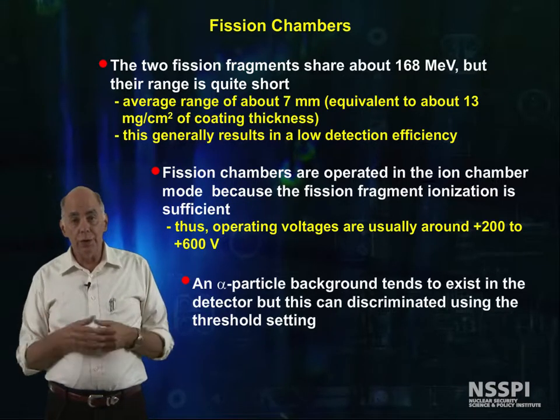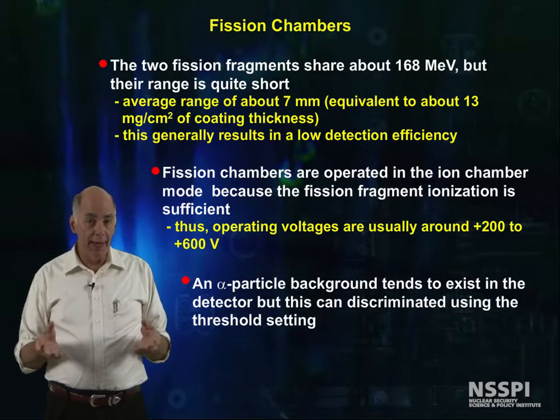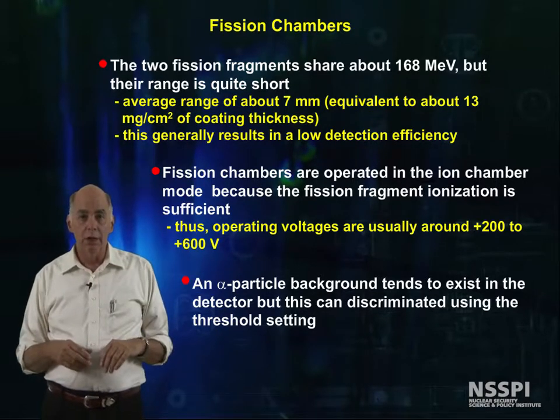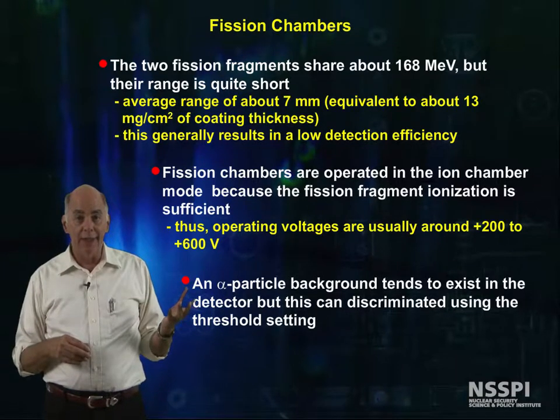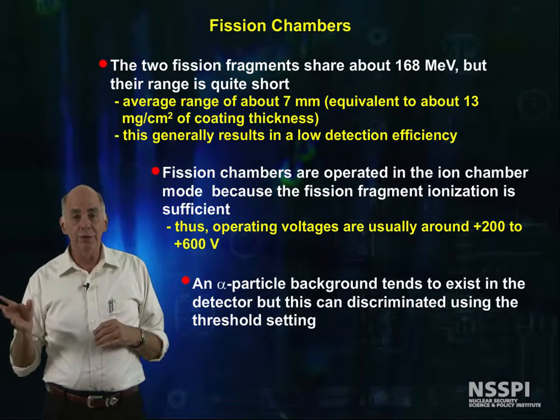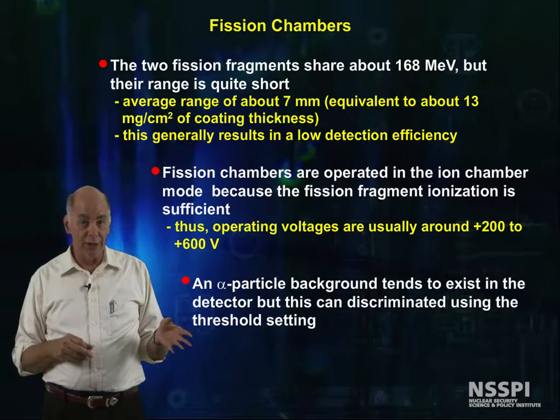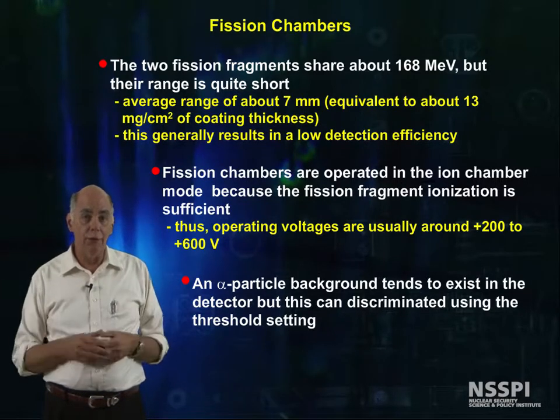There is also an alpha background from the decay of the U-235, but who cares? Because you have so much energy from the fission fragments, it's easy to discriminate the fission fragments out of this alpha signal. And as we've seen, gamma rays don't even come into play.